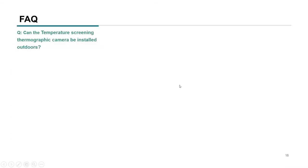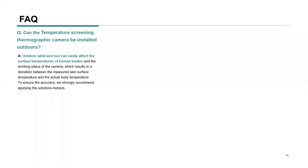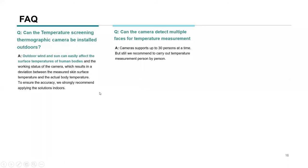Frequently asked questions: Can the thermographic camera be installed outdoors? No — outdoor wind and sun can easily affect skin surface temperatures and the camera's working status, causing deviation from actual body temperature. We strongly recommend installing indoors, away from wind and sun. Can the camera detect multiple faces simultaneously? Yes, up to 30 persons at once, but we still recommend person-by-person screening using a screening channel.